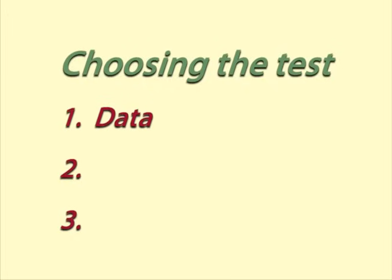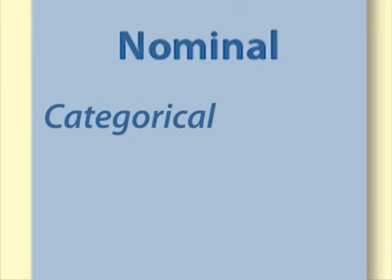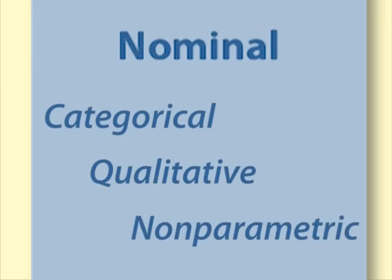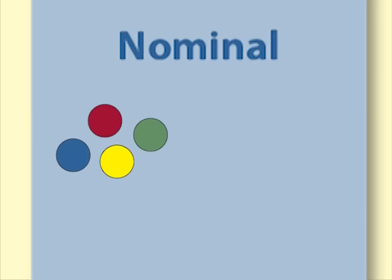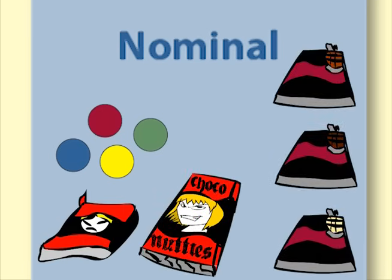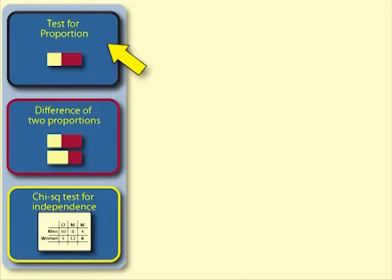Question 1: Data or level of measurement. Is our data nominal or interval ratio? Nominal data is also called categorical, qualitative, or non-parametric. Examples of nominal data are colour, whether parts are defective or not, or preferred type of chocolate. Nominal summary values are usually stated as frequencies, proportions, or percentages. The tests that involve nominal data are test for a proportion, difference of two proportions, and chi-squared test for independence.